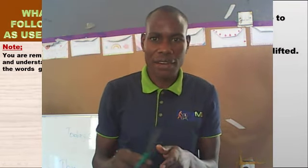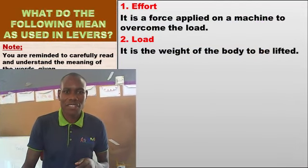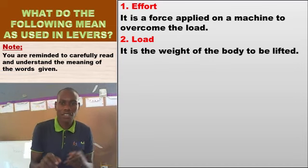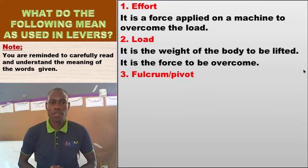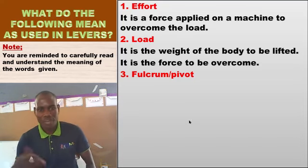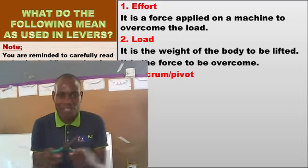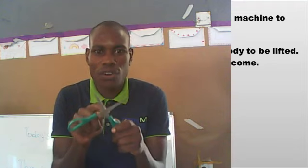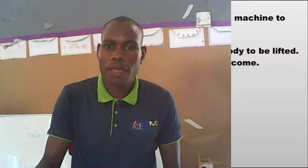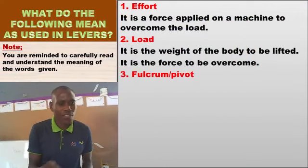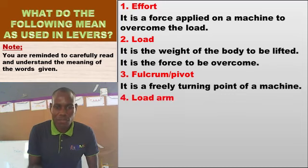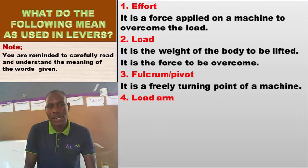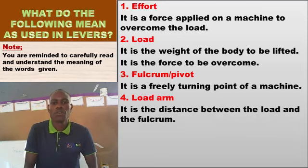There is also another meaning of load: a force to be overcome. The fulcrum, also called the pivot, is the turning point of a machine — the part of a machine that turns. The load arm is the distance between the load and the pivot.